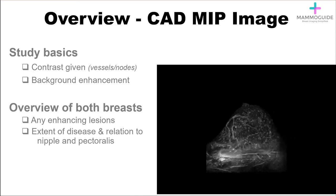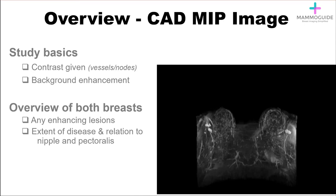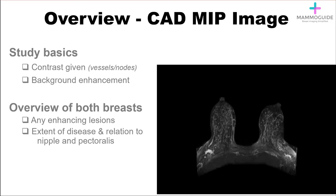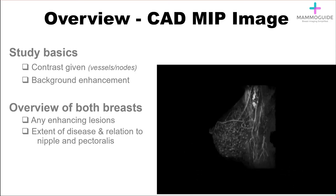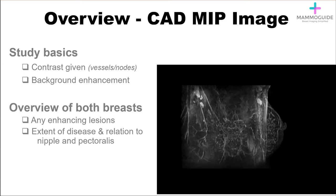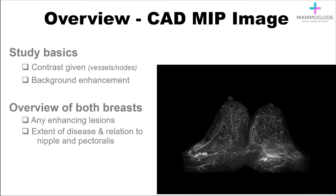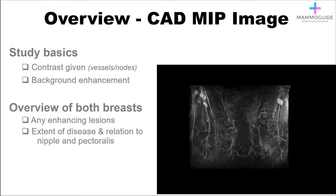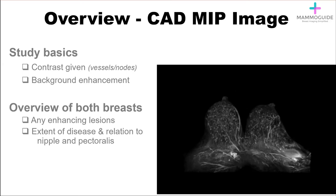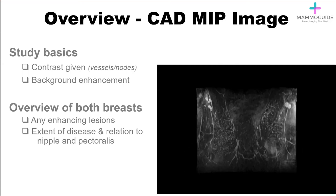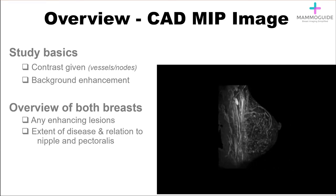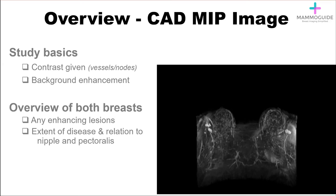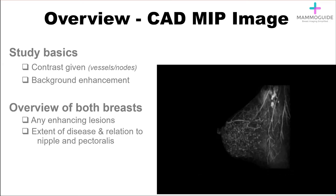Next, look at the maximum intensity projection image. This image, created by the CAD software, gives a great overview of both breasts. It also helps you to evaluate and ensure that contrast was administered and allows you to evaluate the background enhancement. With this sequence, which you can scroll through and look at at any angle, you're looking for any enhancing lesion, and if there are enhancing lesions or known malignancies, this sequence is very beneficial to evaluate for extensive disease or look at the relation of the malignancy to the nipple and pectoralis.